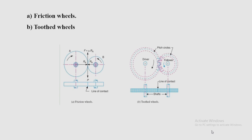As long as the tangential force exerted by wheel A does not exceed the maximum frictional resistance between the two wheels, motion is transmitted. But when the tangential force exceeds the frictional resistance, slipping will take place between the two wheels. The friction drive is not a positive drive — similar to belt and chain drives, which are also not positive drives.